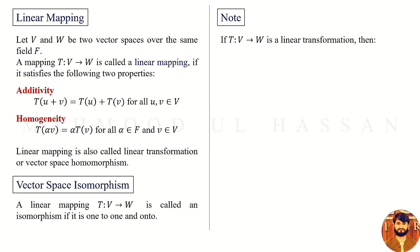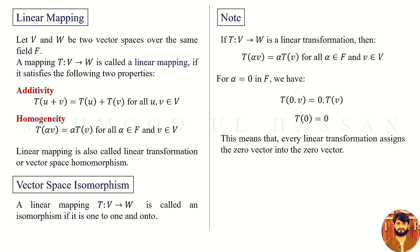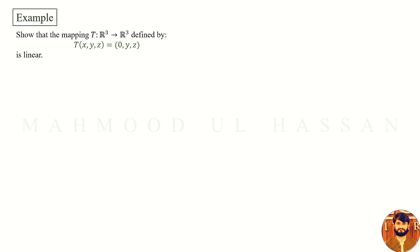Note: Let T be a linear transformation from vector space V to vector space W. Then by the homogeneity property, T of alpha V equals alpha times T of V, for all alpha in the field F and V in the vector space V. If we substitute alpha equals zero, we get T of zero times V equals zero times T of V. By simplification, T of zero equals zero. This means every linear transformation maps the zero vector to the zero vector.